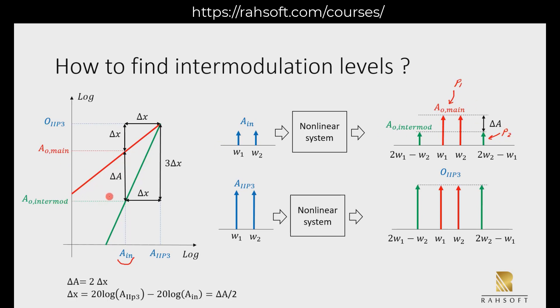If I call this P1 and this P2, these two power levels, so this level is going to be P2, and this level is going to be P1. Up to here is clear, and this is my A_in.